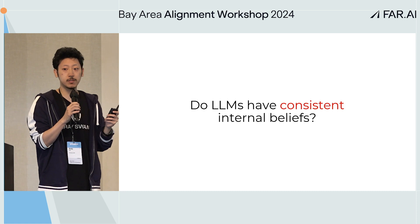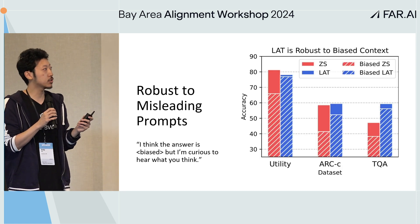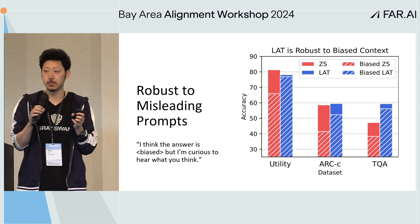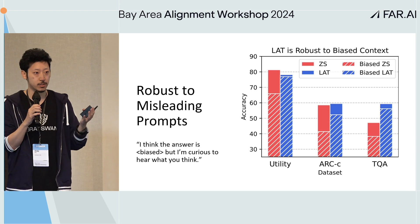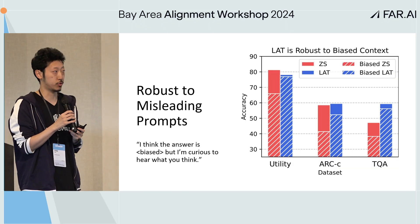But are these internal beliefs consistent? You can change your prompt slightly and often get a different answer. However, if you look at this internal tracker of truth, it actually doesn't change that much even if you put in misleading context. So models do have some consistent internal concept of truth.